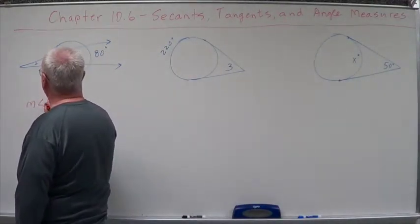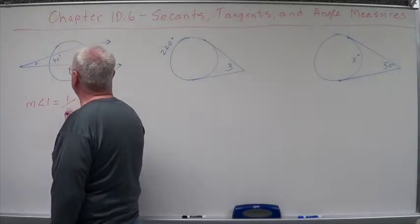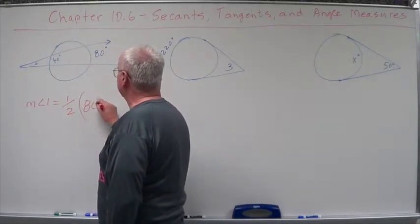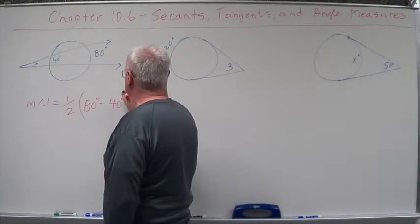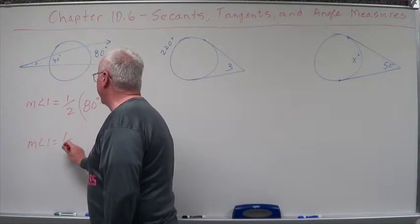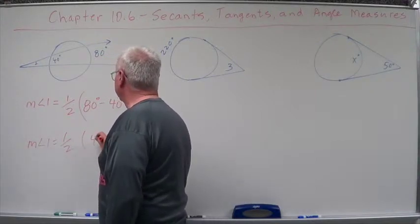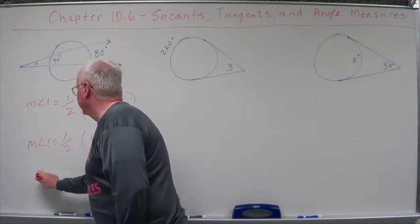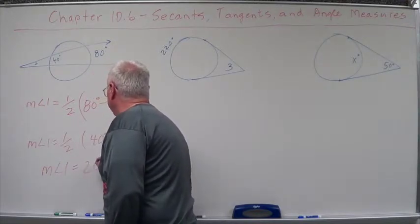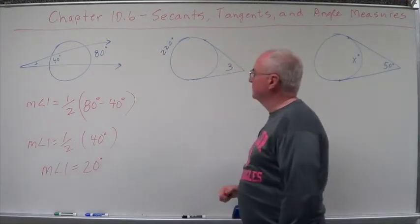So, the measure of angle one is going to equal one half 80 minus 40. Measure of angle one equals one half of 40. So, the measure of angle one is going to equal 20 degrees. Pretty simple. Straightforward.